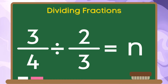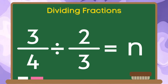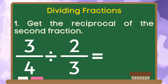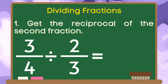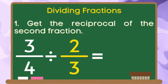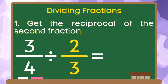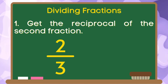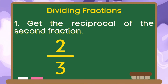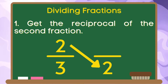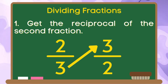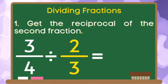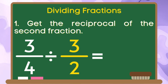We have the example: 3 fourths divided by 2 thirds is equal to n. Let us do step one — get the reciprocal of the second fraction. In this example, 2 thirds is the second fraction. To get its reciprocal, we are going to flip the position of these numbers. 2 will become the denominator, and 3 will become the numerator. Therefore, the reciprocal of 2 thirds is 3 halves.